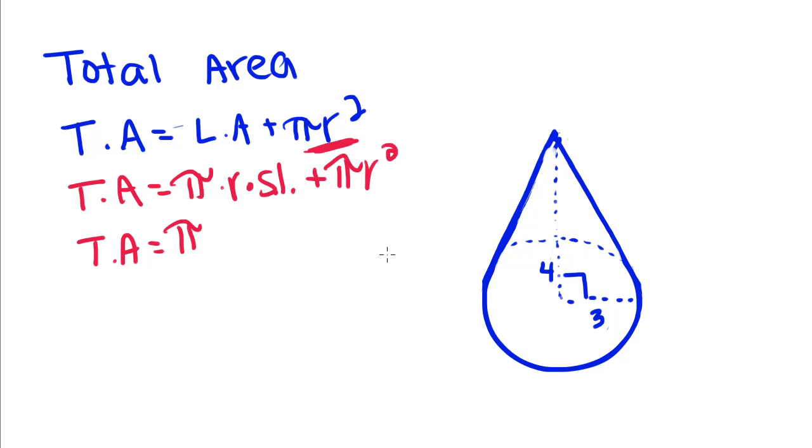So pi times our radius, which is 3, times our slant height, which we just found a minute ago to be 5, plus pi r, which is 3, squared.